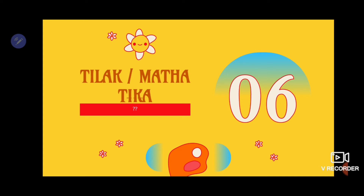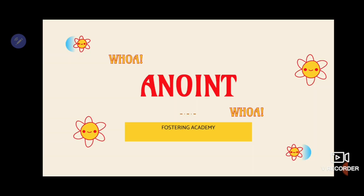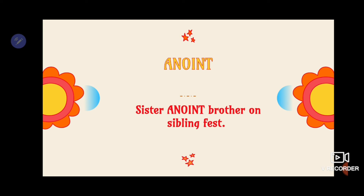The next word is Tilak or Mathatika. Sisters normally use this technique before tying rakhi on the brother's wrist. What do we call Tilak or Mathatika in English? It's anoint. Sister anoint brother on Sibling Fest. Anoint is a word which is usually used as a religious symbol. We generally use Tilak or Tika with rice and red powder — that is also called anoint. The sisters anoint brother on Sibling Fest.